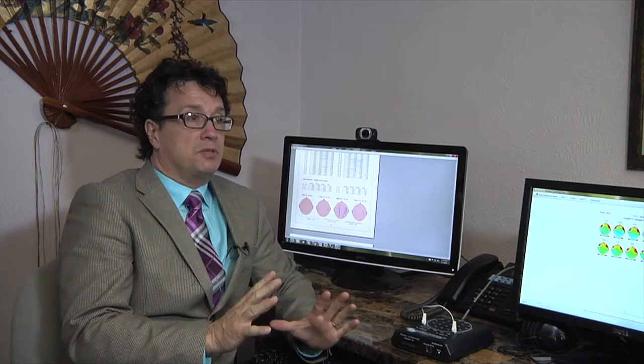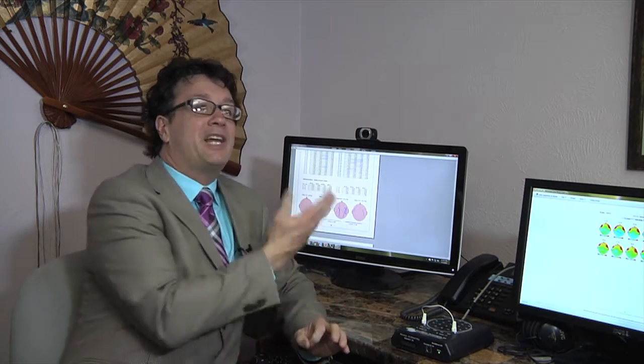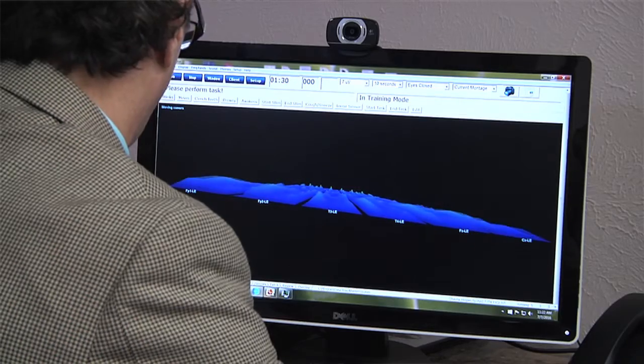And so we take those symptoms that a person might have after an injury and then we relate it to the brain map. After the accident, after the fall, after the blunt trauma to the head, did we have problems with cognitive issues, memory issues, headaches, slurred speech, problems keeping up with conversations.